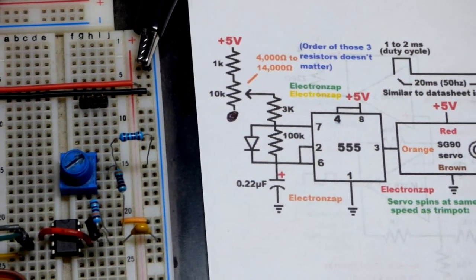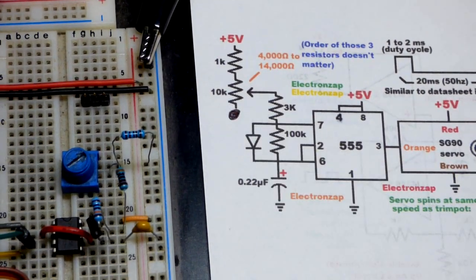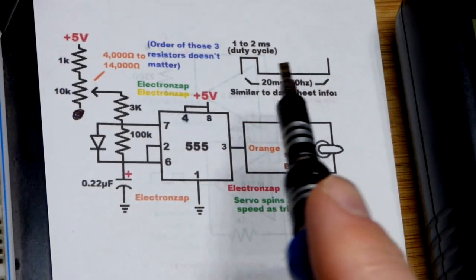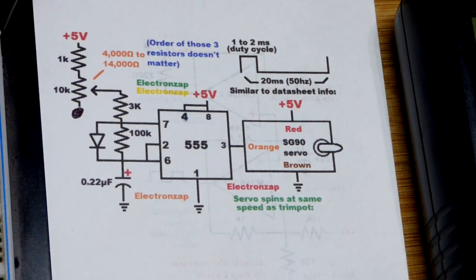We have a trim pot so that we can adjust it, because the position depends on how wide that pulse is.